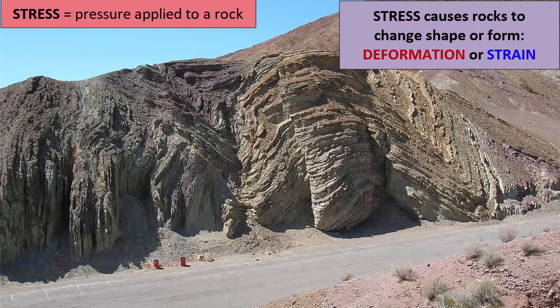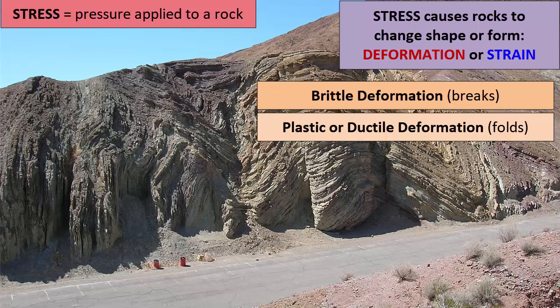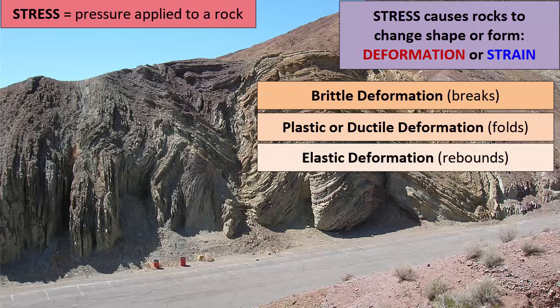In some cases, strain or deformation of a rock leads to breaking the rock, which we call brittle deformation. In some cases, strain or deformation leads to a rock bending or folding, which we call ductile or plastic deformation. And in some cases, strain or deformation of a rock isn't permanent. When the stress is eventually released, the rocks go back to their original shape. We call that type of strain or deformation elastic deformation.